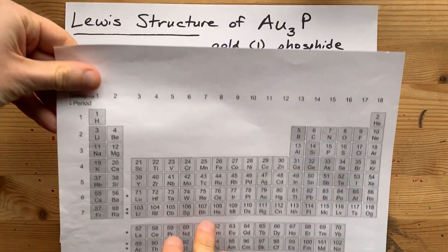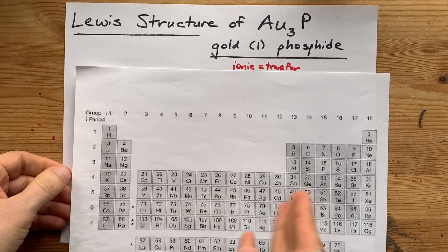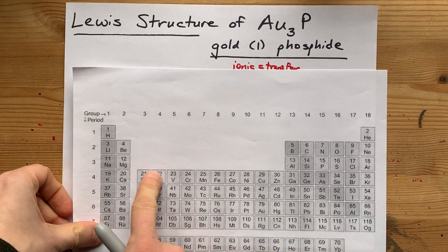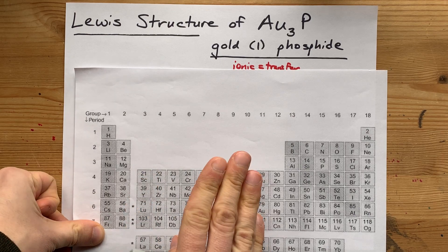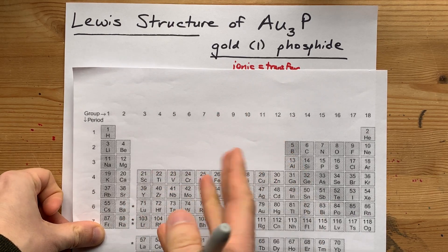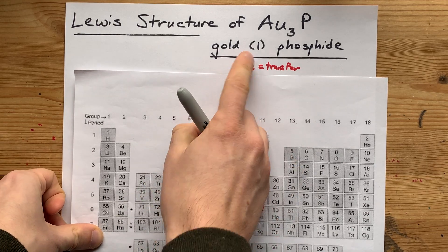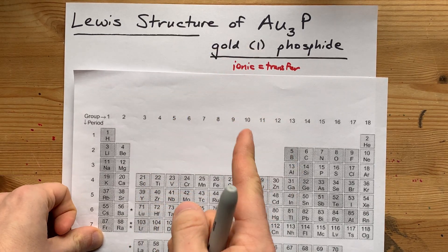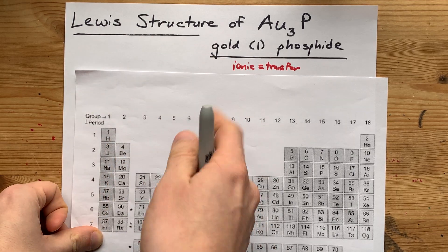Now, the question becomes, how many electrons does each of those atoms bring? Gold, being a transition metal, it's actually tough to decide how many electrons to bring with it. The trick is, whatever the charge was on gold, that's how many electrons you need to give it in the Lewis structure originally.